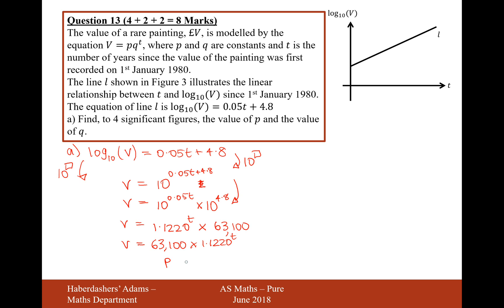Therefore, this value here is the value of P, and this value here is the value of Q to the power of T. So P equals 63,100, and Q equals 1.1220. That's the answer for part A then.